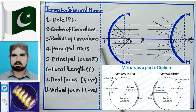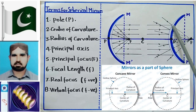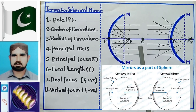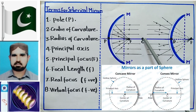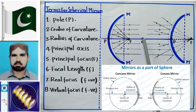दूसरी definition है center of curvature। आप देख रहे हैं कि दोनों mirror curved हैं और curved हिस्सा किसी sphere का होता है। उस sphere का कोई center भी होता है। Spherical mirror जिस sphere का हिस्सा होता है, उस sphere के center को center of curvature कहते हैं और इसको C से जाहर करते हैं।